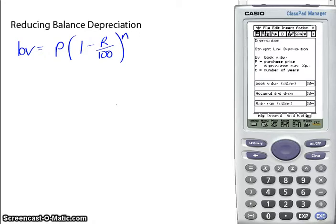times 1 minus the rate as a percentage to the power m. I'll just annotate that for you so you can see what that looks like. So here's my book value.